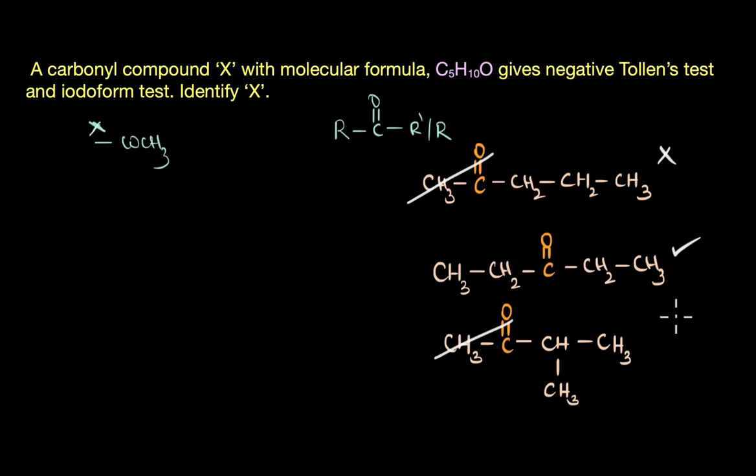Now some of you might be wondering that we are looking only at aliphatic systems here. What if our given ketone is a cyclic ketone? So let's see what a cyclic ketone with five carbon atoms looks like. That would be something like this. So this cyclic ketone is called cyclopentanone.